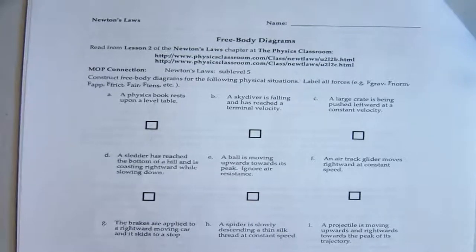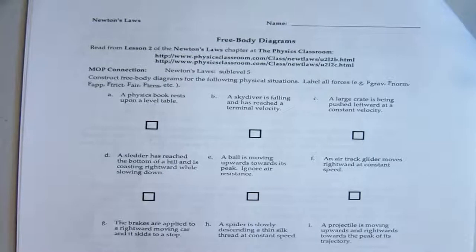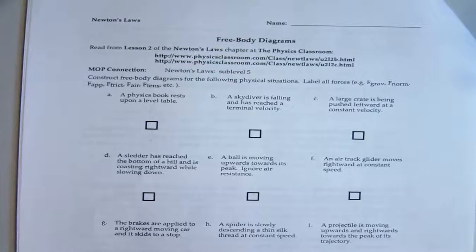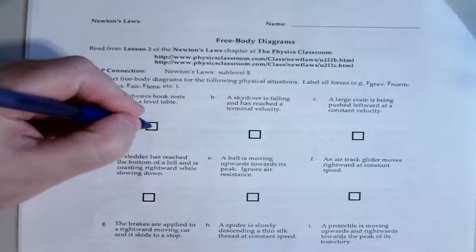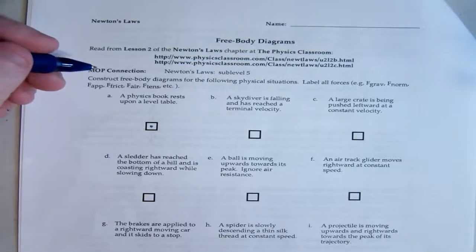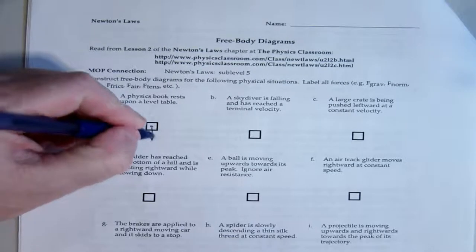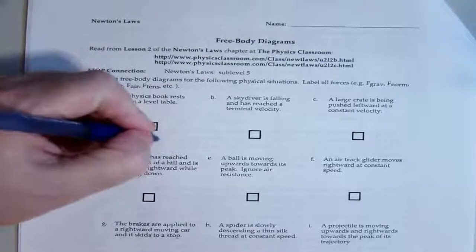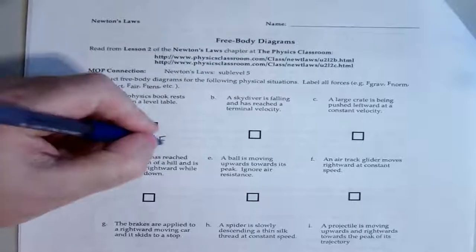So A is a really easy one. Something to remember, if acceleration is zero, then the forces are balanced. So that means all things pushing up and down are equal. So that's an important thing to note, and you'll see that later. So let's look at A. Physics book is resting on the table. So we start with our little dot here. It's resting on the table. We know that it has a downward force because there's a force of gravity. We'll just call that FG.